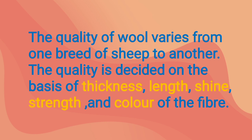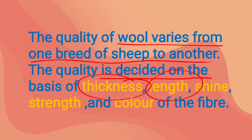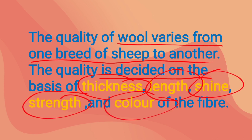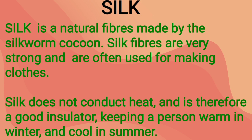The quality of wool varies from one breed to another. The quality is decided on the basis of five different properties: thickness, length, shine, strength, and color of the fiber. These five factors are responsible for determining the quality of wool.